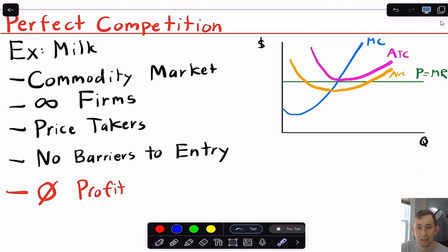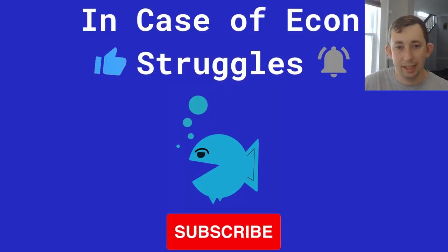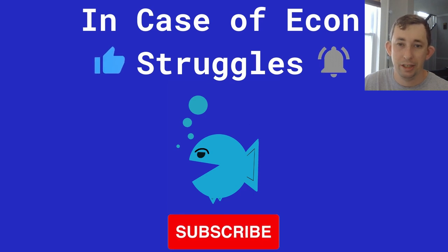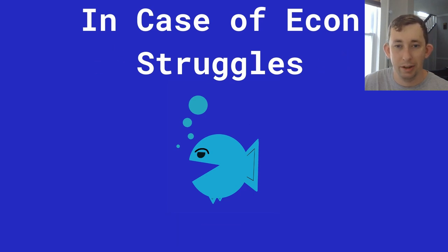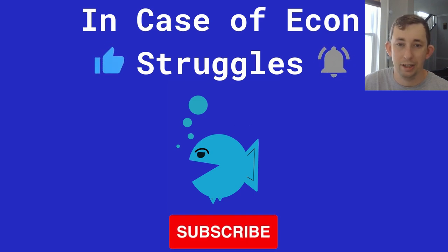So again, this is just the main takeaways from your intermediate micro theory class that I think you should know. Again, you're always thinking marginal benefit equals marginal cost. You should definitely know how perfect competition works and these curves that I've shown on the right. So like I said, if you've got any questions or comments about any of that, please put that down below. But if you're finding these videos helpful, please like and subscribe, and we'll see you next time for another case of econ struggles.